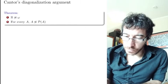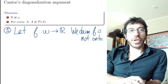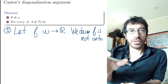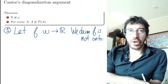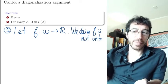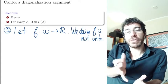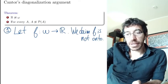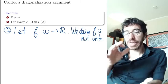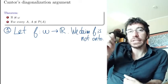First proof: the proof goes by showing that there are no onto functions from the natural numbers to the reals. So we're going to take any function from the natural numbers to the reals and show it cannot be onto — that's why there cannot be any bijection between them. To show a function is not onto, we have to find an element in R that is not in the image of F.